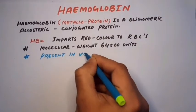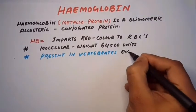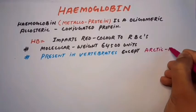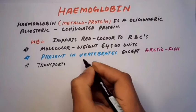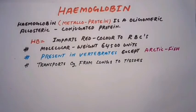Haemoglobin is present in all vertebrates except arctic fish. Haemoglobin transports oxygen from lungs to the tissues.